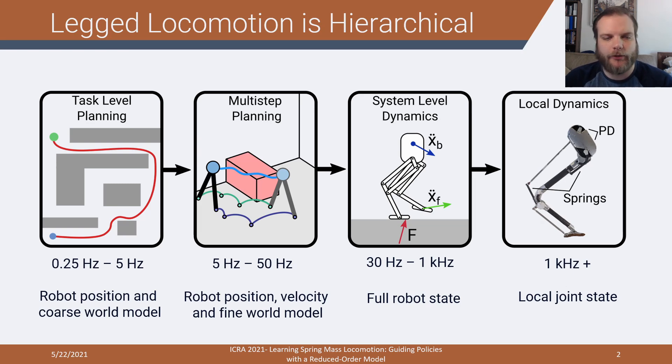In my view, legged locomotion is fundamentally a hierarchical problem where the levels of the hierarchy are separated based on the frequency of control and the information content available. At the lowest level, you have local dynamics at a very high rate. This includes the passive dynamics, like the springs and inertia of your leg, and also the active compliance, so generally local PD feedback control.